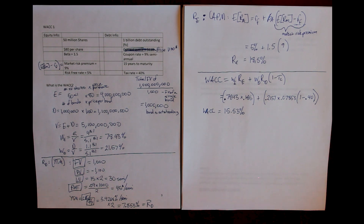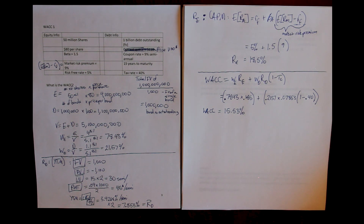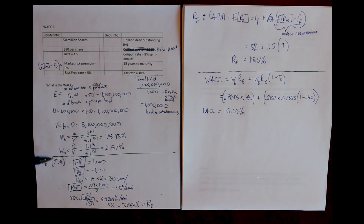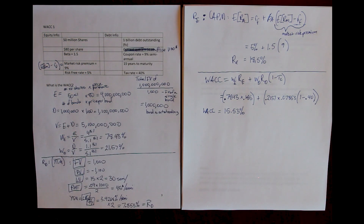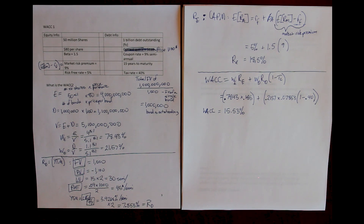Definitely expect to see a problem like this on the exam. Like other big problems in the class, it will be broken up into a series of about four questions where you do each part individually — first the weights, then the costs, then the WACC. Make sure you can do each one of these. We've done all of this before individually; we're just now putting it all together.